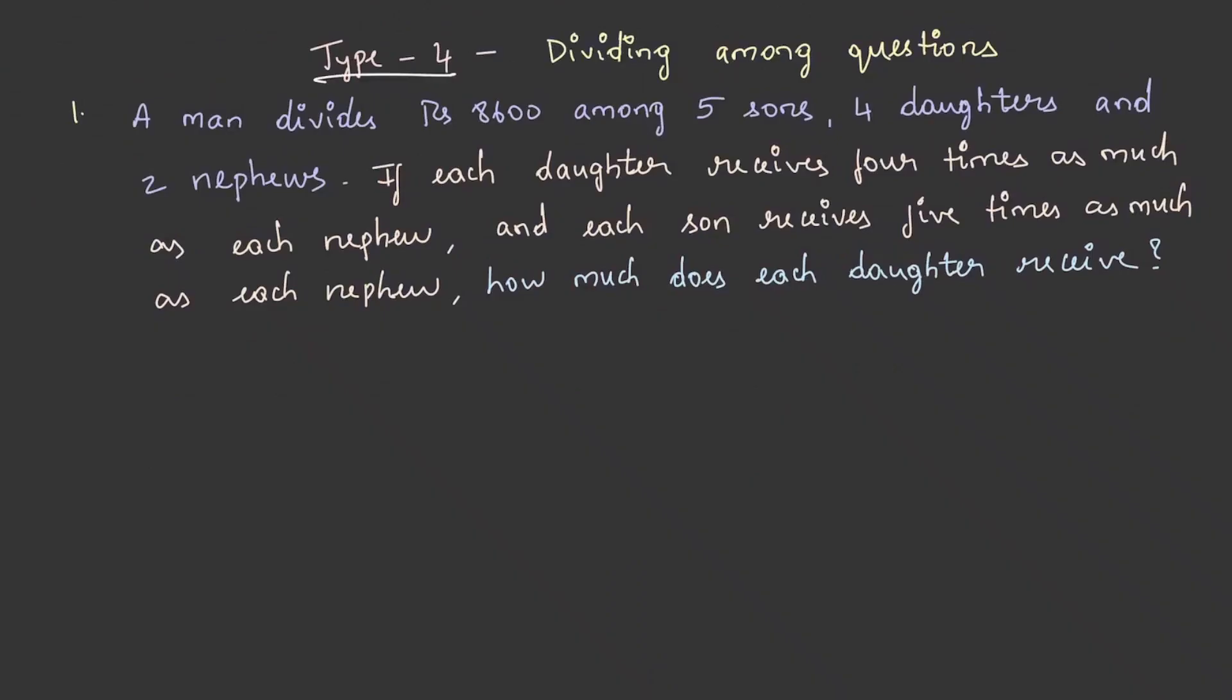We shall get into the category 4 questions, type 4. Let's understand questions when money is divided among few people. Here is the first one: a man divides rupees 8600 among 5 sons, 4 daughters and 2 nephews. If each daughter receives 4 times as much as each nephew and each son receives 5 times as much as each nephew, how much does each daughter receive?